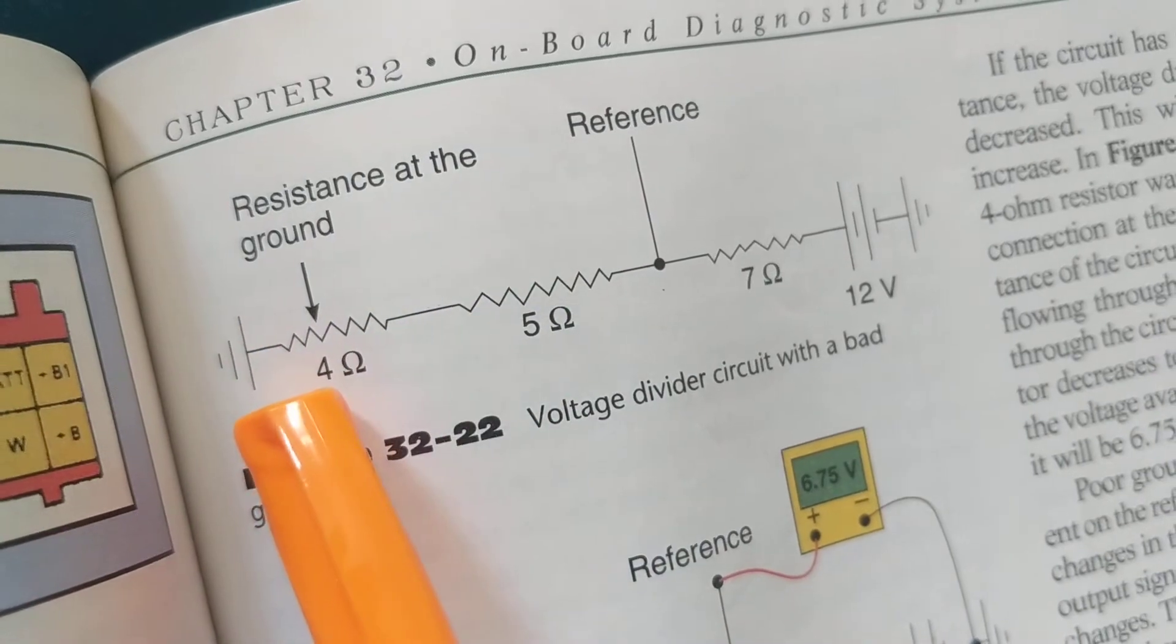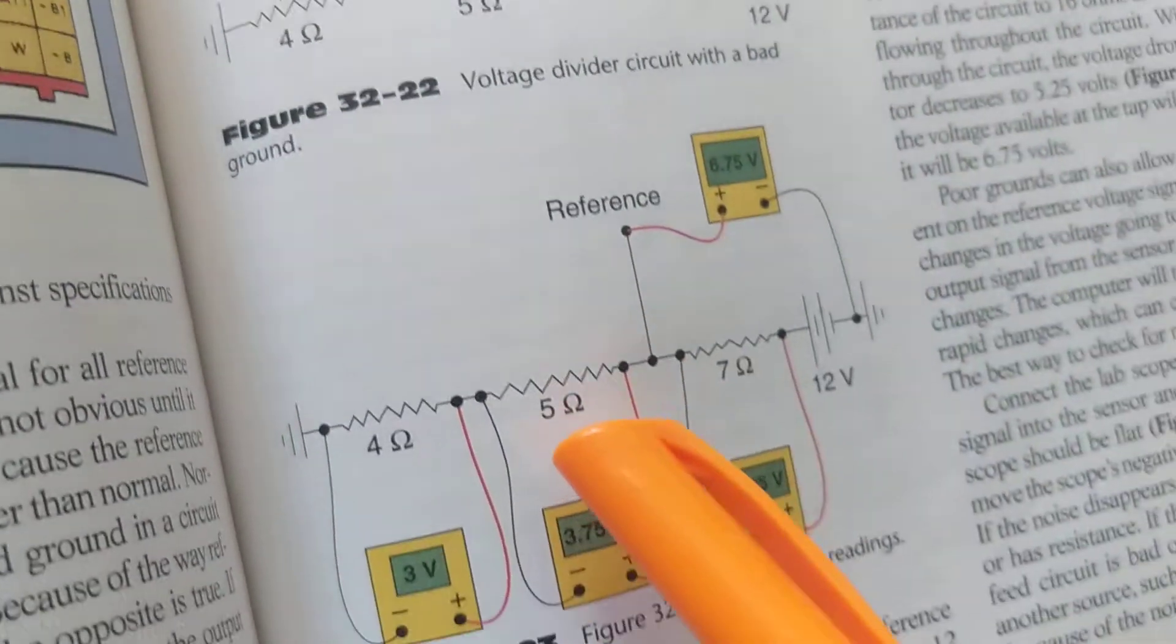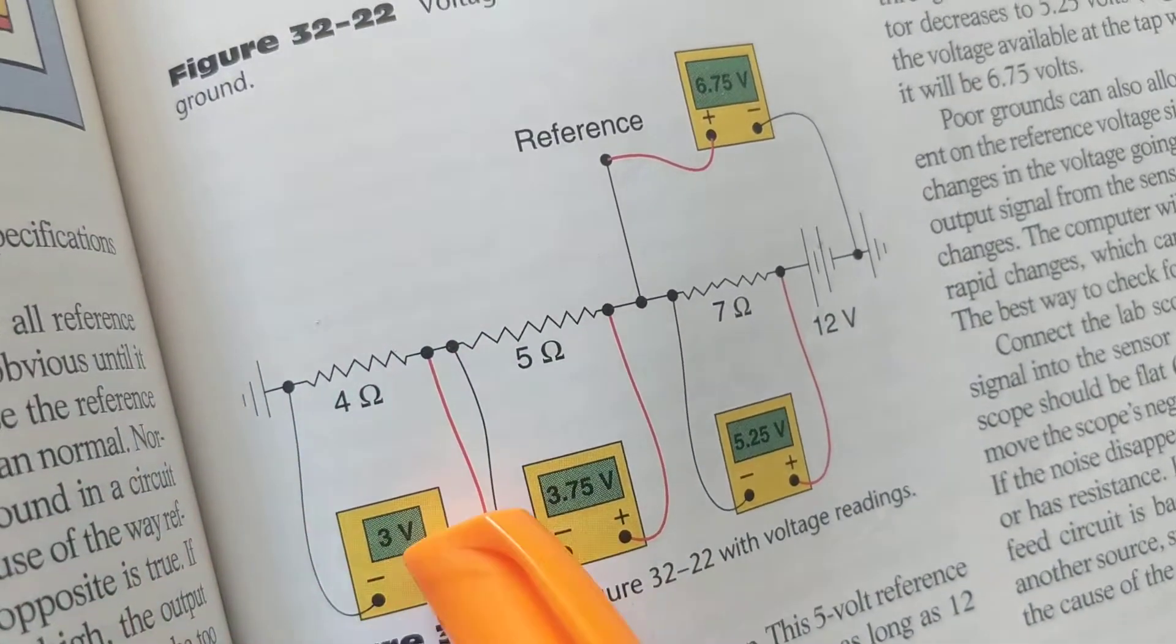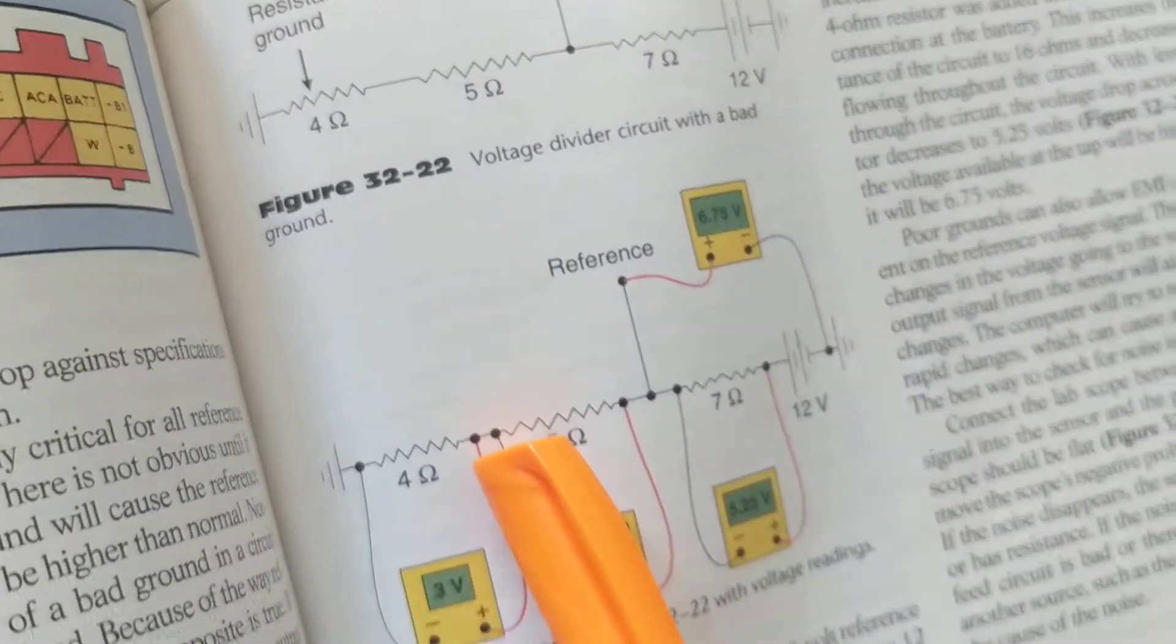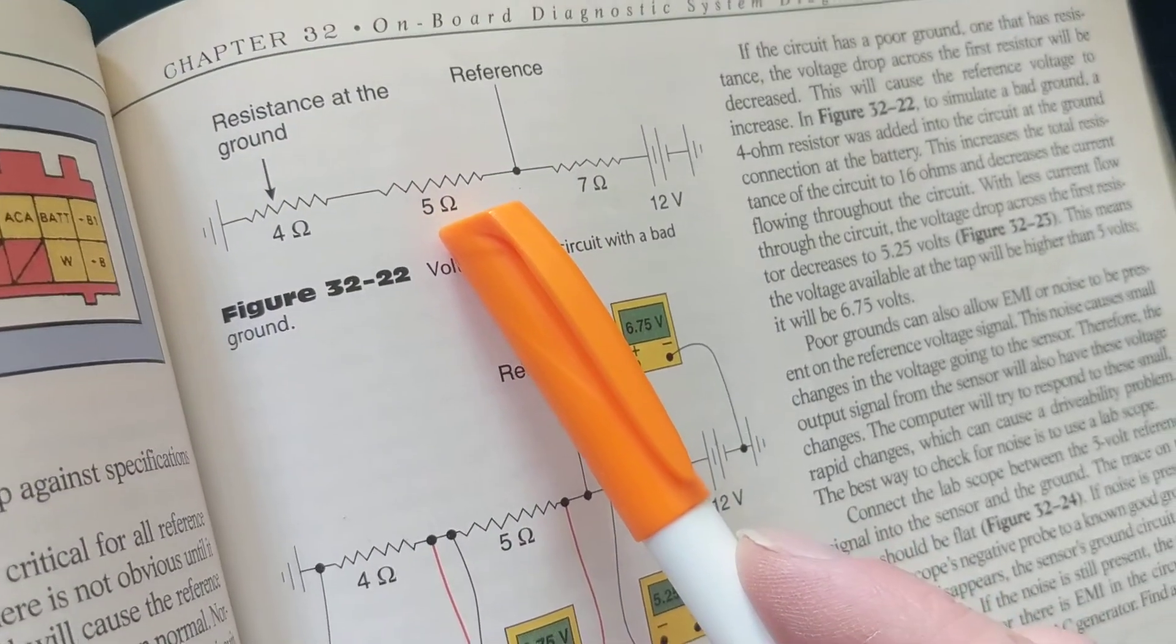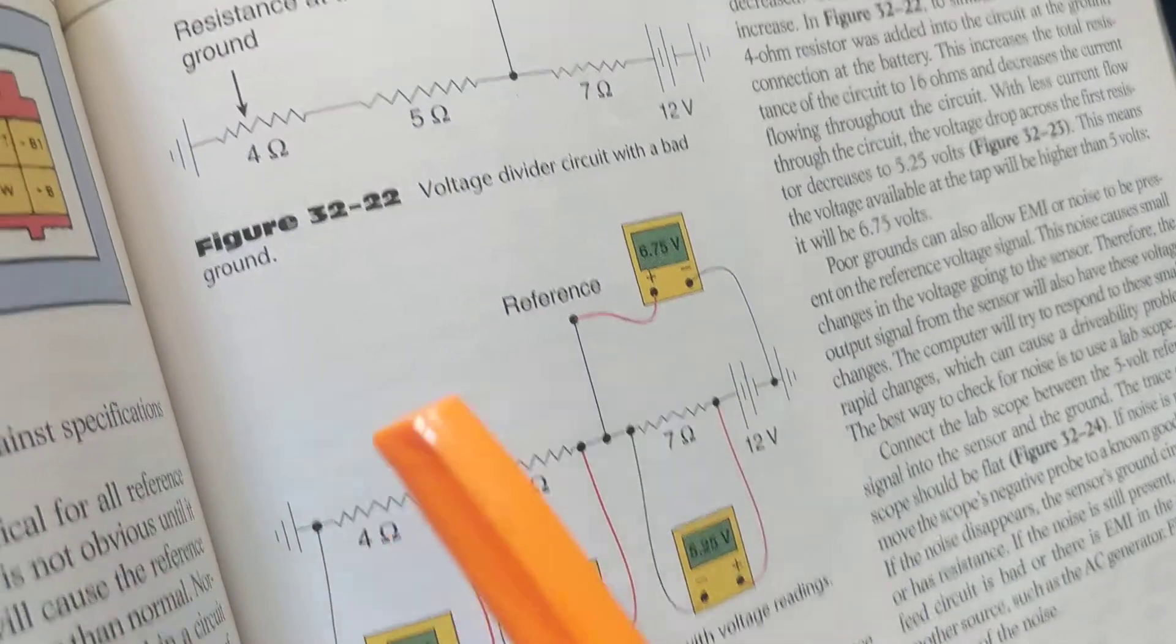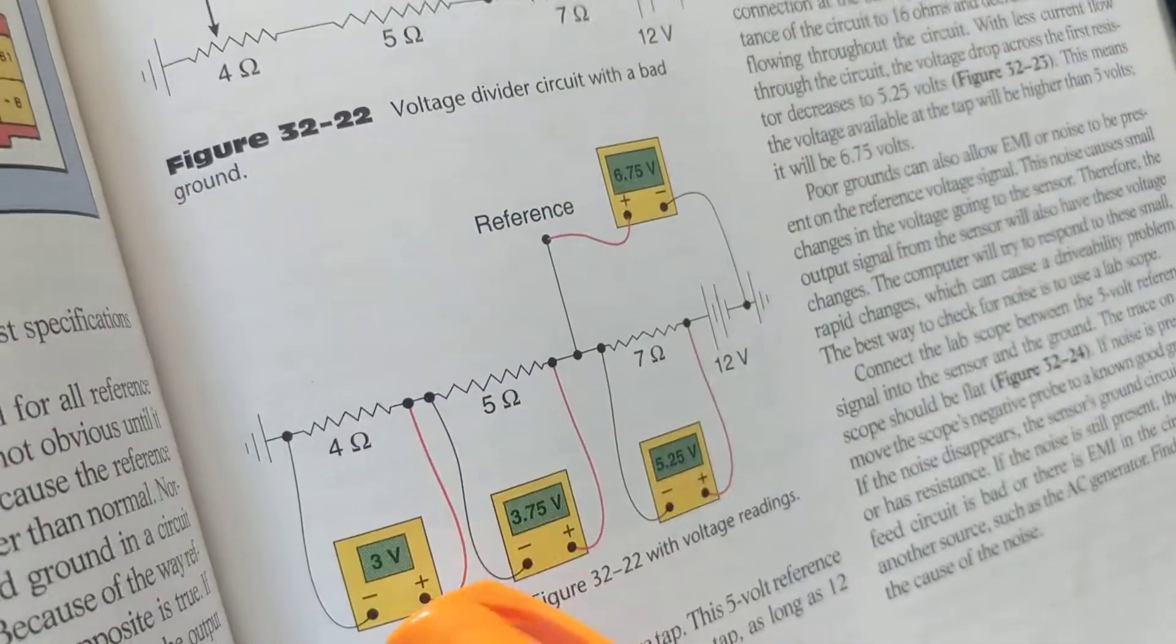Resistance to ground, what does it introduce? A voltage drop. We should only have 7 ohms and 5 ohms, and we were introduced by 4 ohms over here from resistance at the ground, corrosion, whatever there it is.